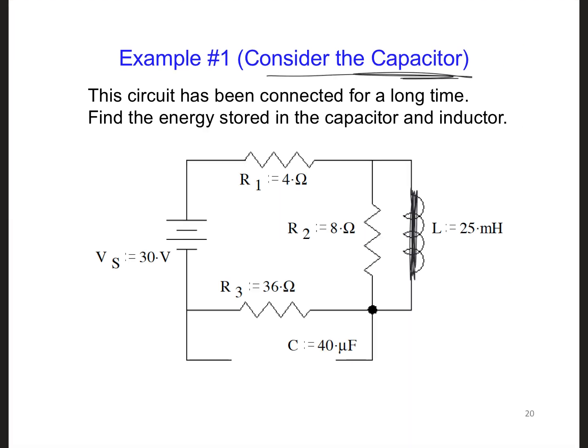Now, if we consider the capacitor energy, we have an open circuit and a short circuit for the inductor. So to get the capacitor energy, we have energy for the capacitor is one-half C, then the voltage across the capacitor squared.